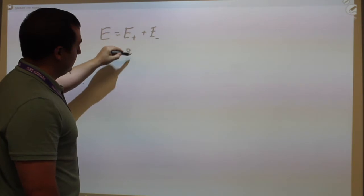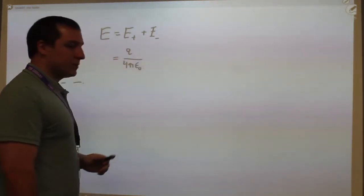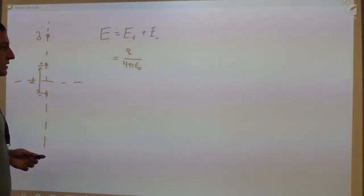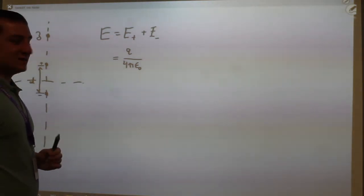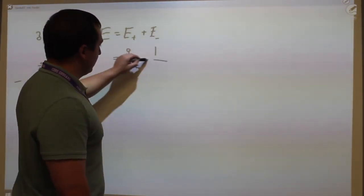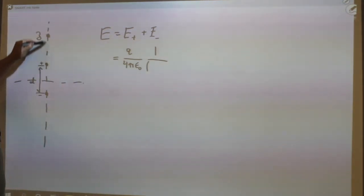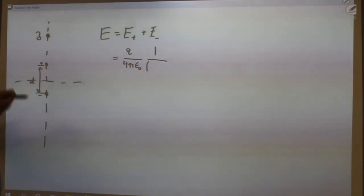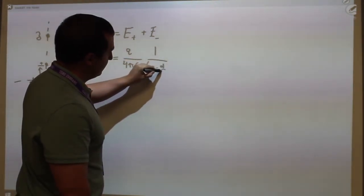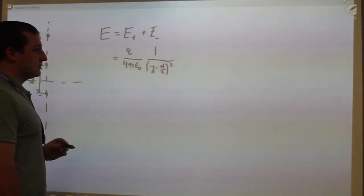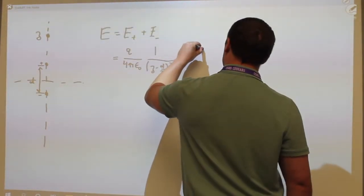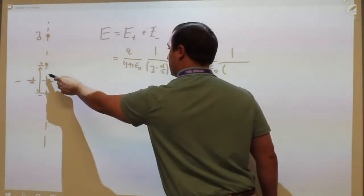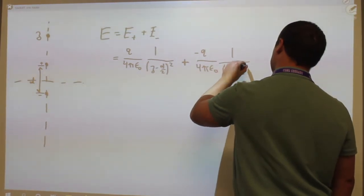The positive charge gives q over 4πε₀. One important thing I neglected to say is that these two charges have the same magnitude, even though they're opposite in sign — that comes with the definition of a dipole. Then I get 1 over r squared, where r is the distance between the positive charge and my point z up here, so r = z − d/2 and I square it. Then I add the field from the negative charge: −q over 4πε₀ times 1 over (z + d/2) squared.